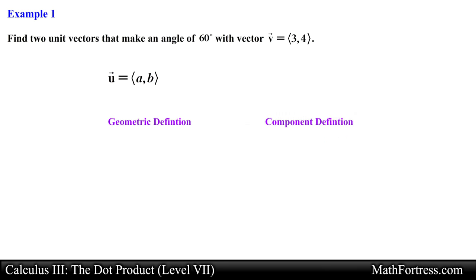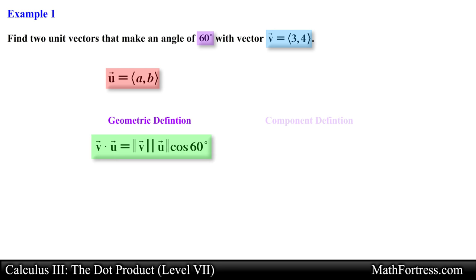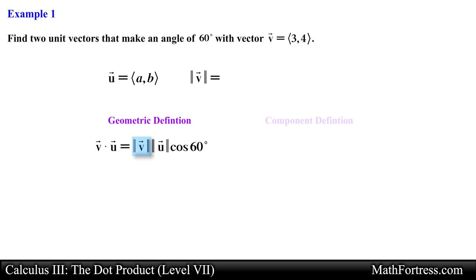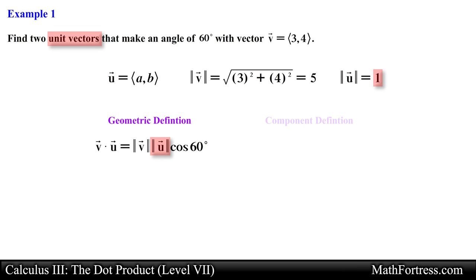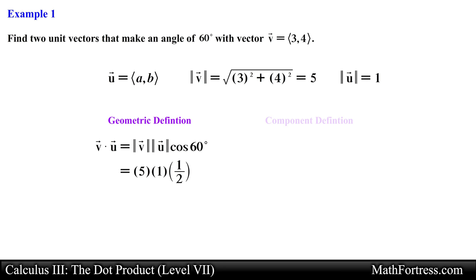Let's start with the geometric definition of the dot product. Since these two vectors form an angle of 60 degrees, the following expression should hold. We find the magnitude of vector v and vector u. Since vector u is a unit vector, its magnitude is equal to 1. Substituting these values into the right side of the geometric definition of the dot product and simplifying, we obtain 5 over 2.